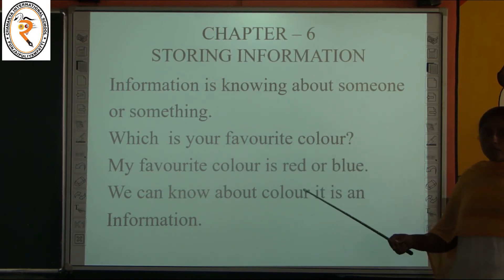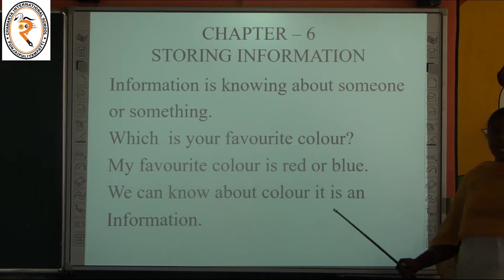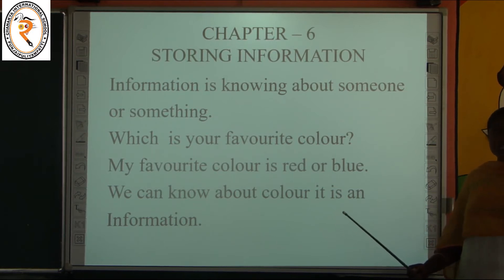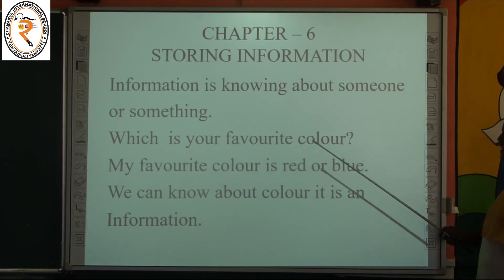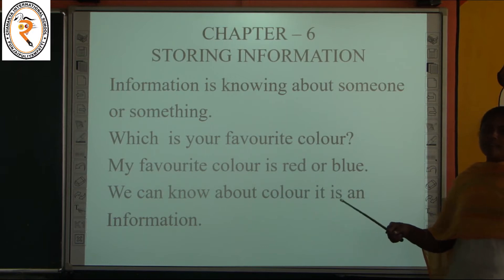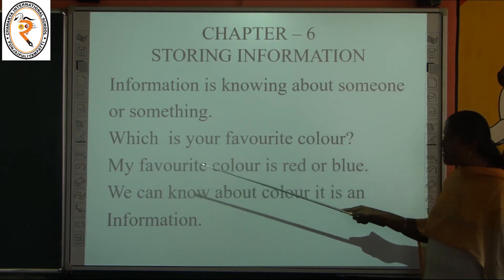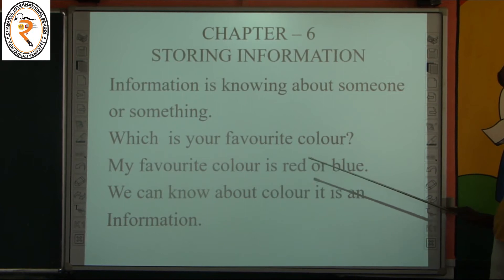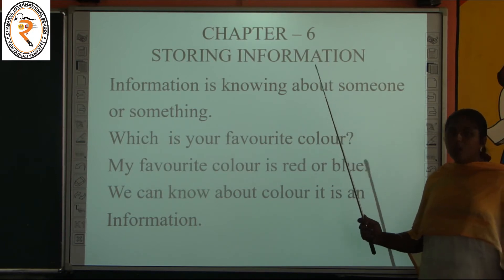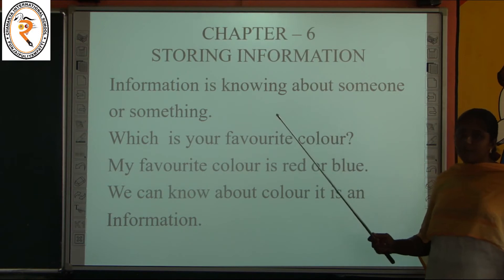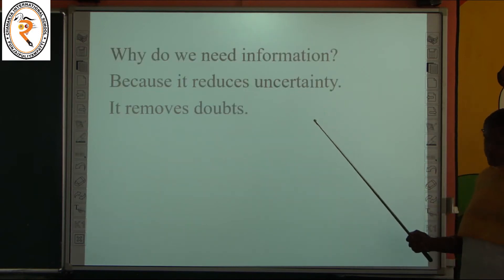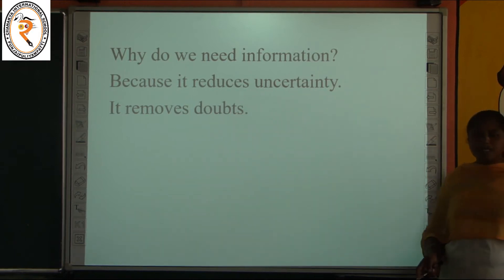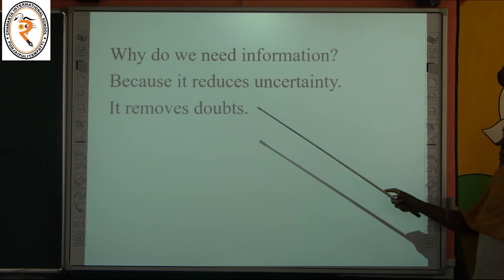If I am asking your name and you are telling your name, it is information. Your name is information. Information is knowing about someone or something. For example, I am looking at a tree and asking what it is. So I am knowing that it is a tree — that is information. Which is your favorite color? My favorite color is red or blue — that is also information.